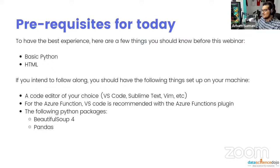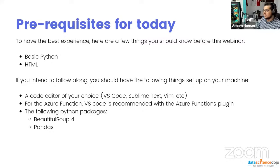I'm not going to be talking about steps for other editors because I'm going to be using VS Code in this webinar. So if you want to follow along for that part, you should have VS Code with the Azure Functions plugin installed. And then there are two Python packages that we are going to need: BeautifulSoup4 — installed as bs4 via pip or conda — and then Pandas to hold the data that we extract.